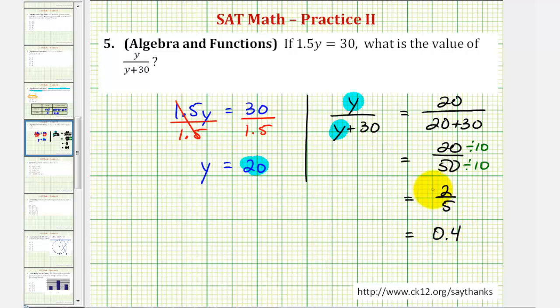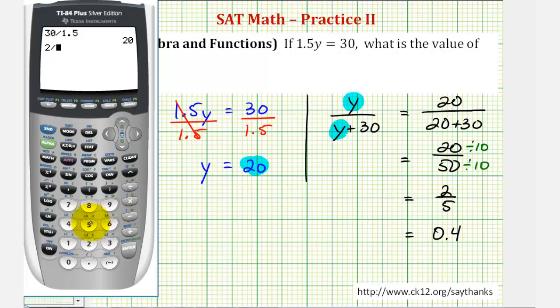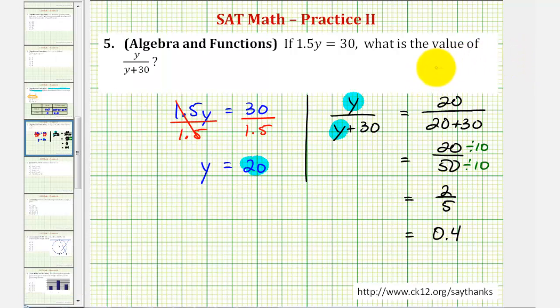Of course, we can check this on the calculator again. So again, 2 divided by 5 is equal to 0.4 or 4 tenths. So based on how we're asked to express the value, it would be either 2 fifths or 0.4.